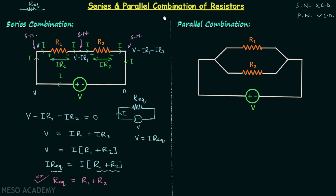Now we will talk about parallel combination — what it is and how to calculate the equivalent resistance. For this, I have taken a network with two resistors connected in parallel and one voltage source providing voltage V. We will first find the types of nodes present in this network. At one common point, three elements are connected, making it a principal node, and therefore current will divide at this node.